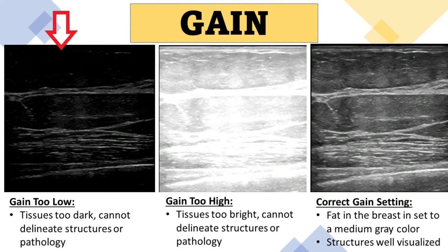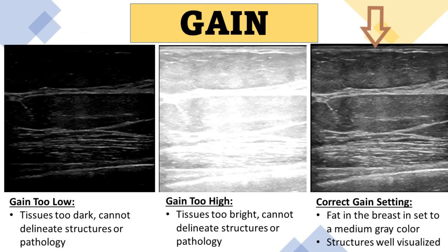In the first image, the gain is set too low — the breast tissue is too dark and you cannot delineate structures or pathology. In the next image, the gain control is set too high — the breast tissues are too bright and you cannot distinguish the structures or layers of the breast tissue or visualize pathology. In the next image, the correct gain setting is used — the fat in the breast is a medium gray color and the structures, tissues, and pathology in the breast are well visualized.